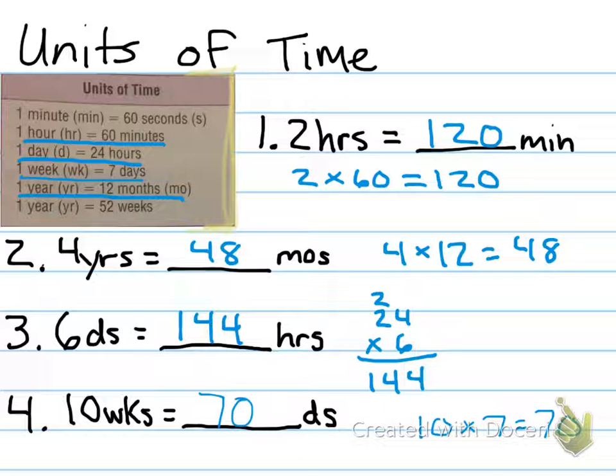Right? You're just multiplying to see how much you get of the smaller unit. Using this chart will make it easier, right? We pretty much need to memorize these if we don't already know them.